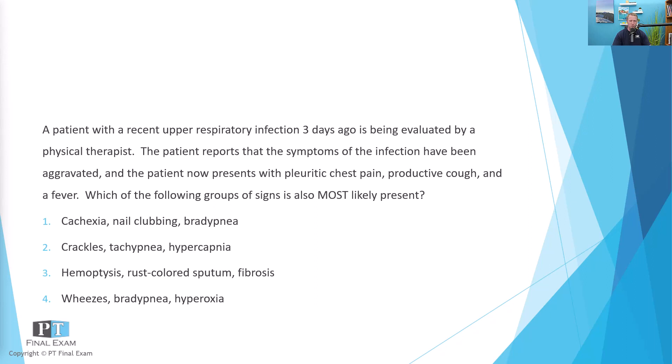The answer options are: Number one — cachexia, nail clubbing, bradypnea. Number two — crackles, tachypnea, hypercapnia. Number three — hemoptysis, rust-colored sputum, fibrosis. And number four — wheezes, bradypnea, and hypoxia.